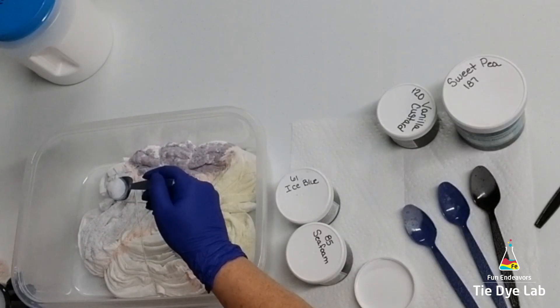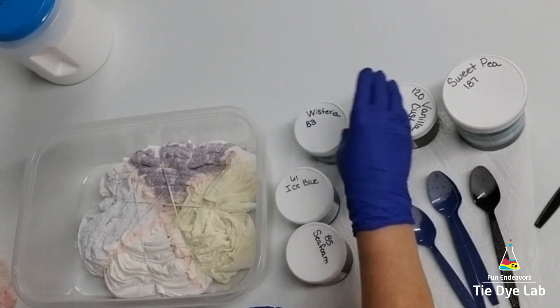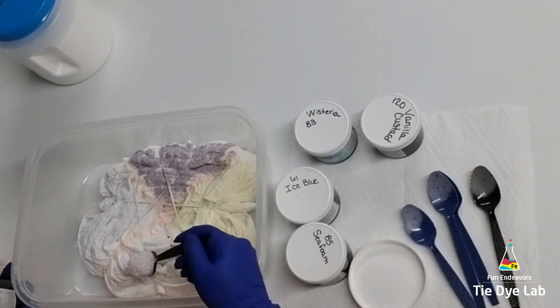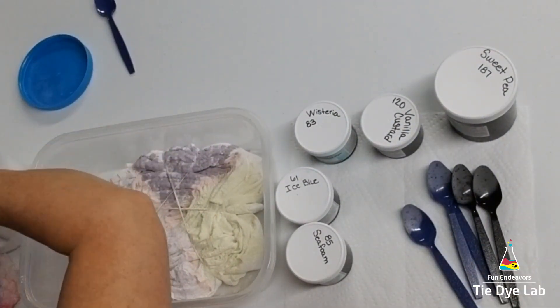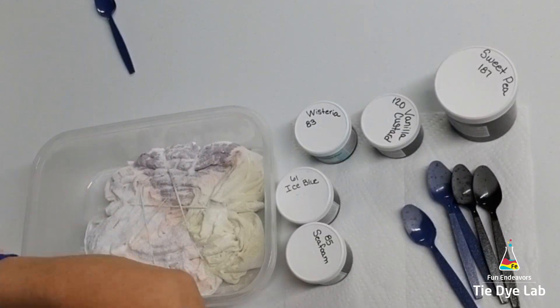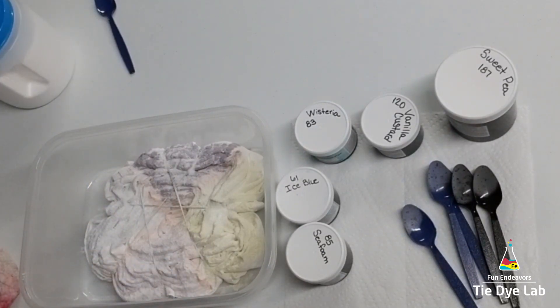So I took another tub, very gently lifted my shirt out of the tub, let some of the liquid drip off of it, flipped it over, put it in the new tub, and applied dye, soda ash, and ice to that side as well.